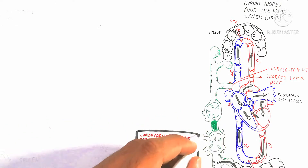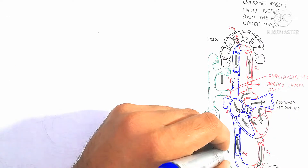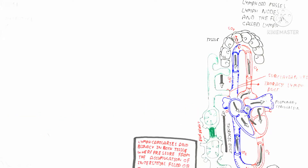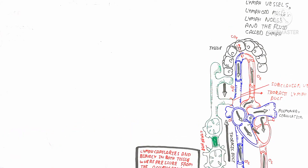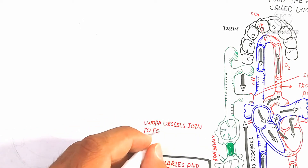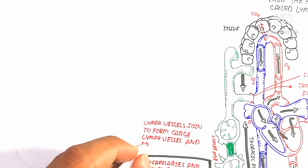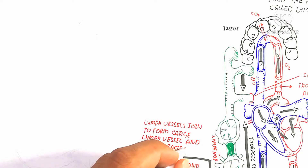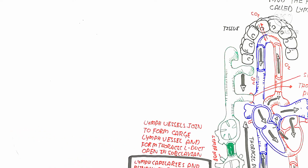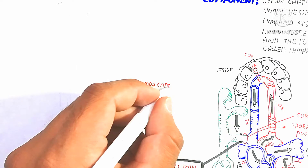It is important to know that all lymphatic vessels drain into the subclavian vein via the thoracic lymph duct. All lymph vessels converge into the thoracic lymph duct. The lymph vessel always moves toward the thoracic duct, which opens into the subclavian vein. Lymph vessels join to form larger lymph vessels and then form the thoracic duct, which opens into the subclavian vein.